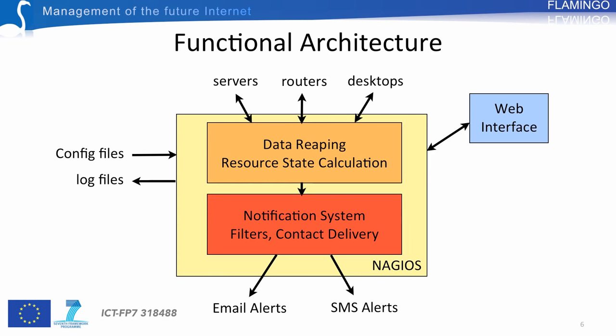These two systems are implemented by Nagios processes and can be run as services on your operating system. Nagios provides a web interface implemented by an external web server and a set of CGI scripts. The configuration is done using simple text files or possibly a Postgres database.